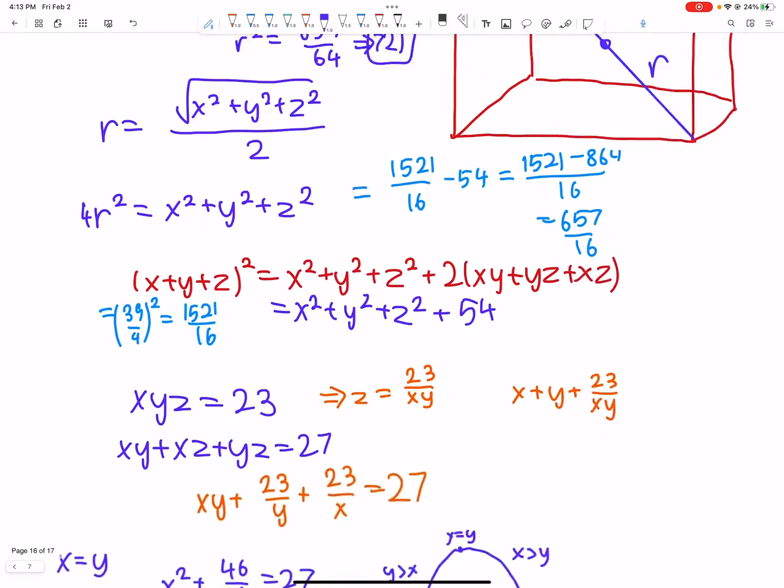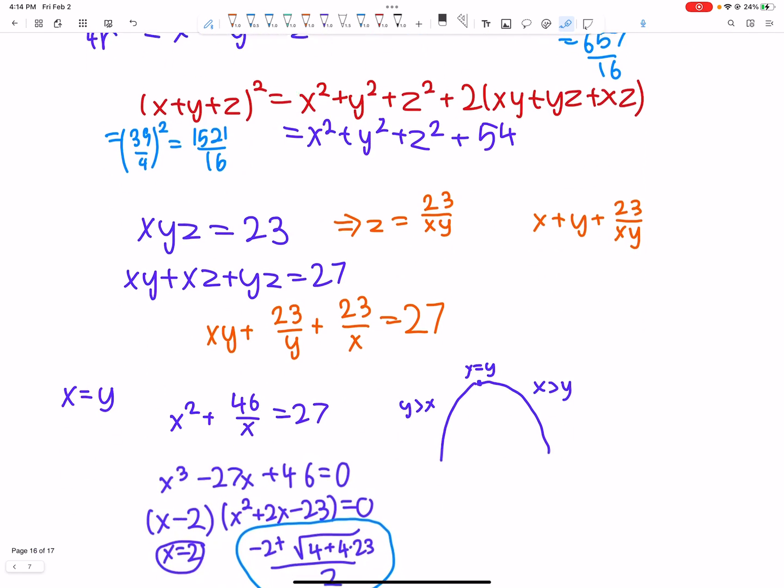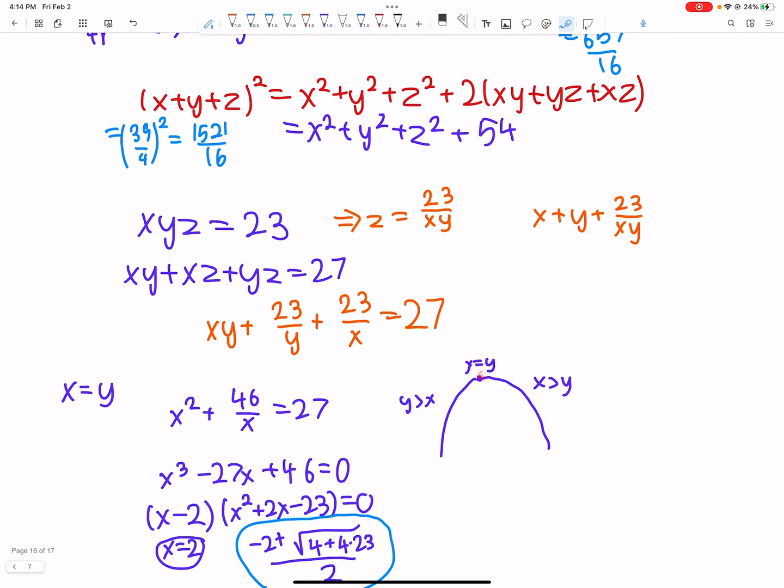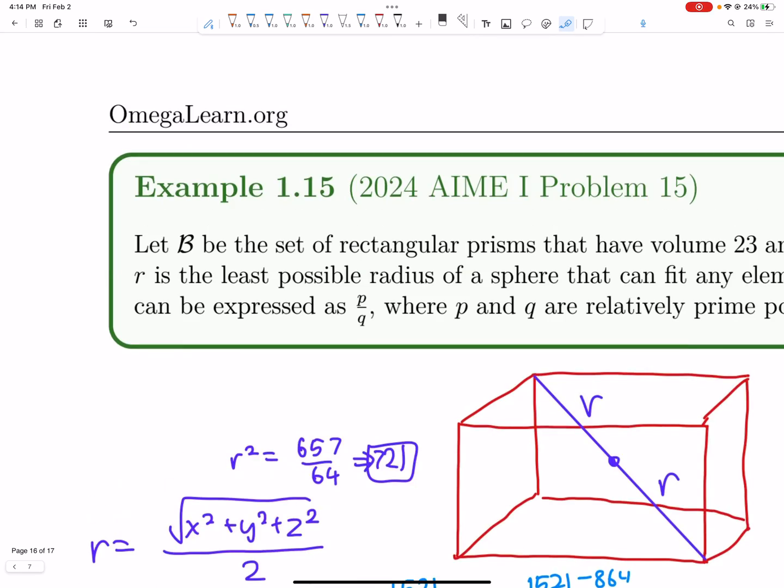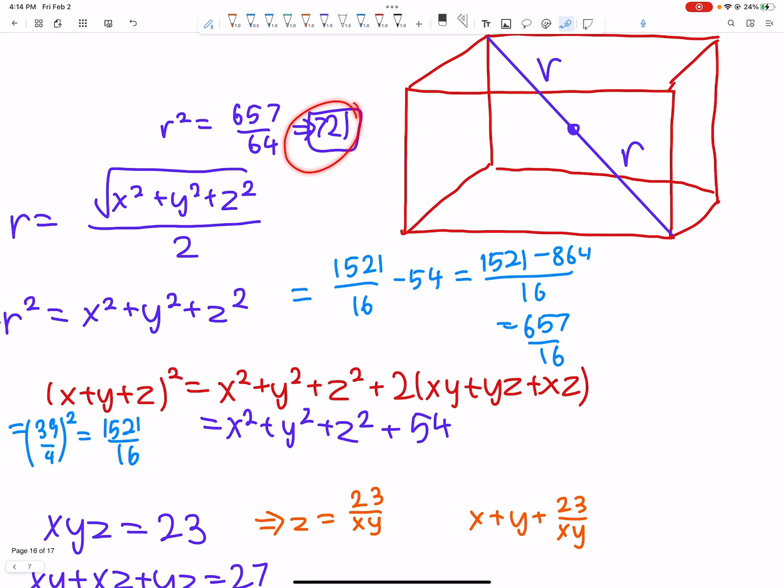A cool problem with some nice meta-solving techniques here. One of them was letting x equals y seeing that that's probably going to be the maximum. And the other was realizing this irrational root is never going to make it to a rational answer. So, we found out that 721 works. I hope you enjoyed this video.